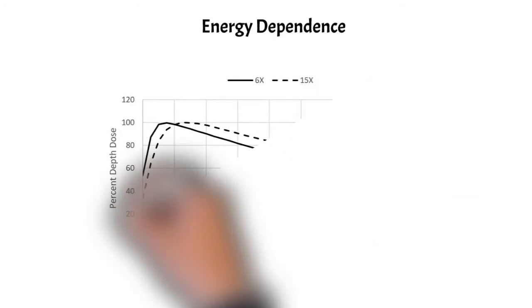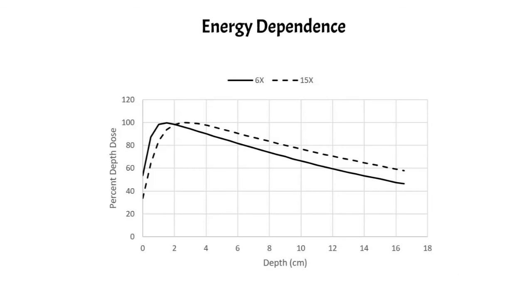Here's an example of the energy dependence of the PDD. Here you see a PDD for 6x and 15x energies, and you can see that the 15x PDD is higher than the 6x PDD and also that the buildup region is longer, so the depth of d max for a 15x beam is actually deeper in a patient than 6x beam and therefore it has greater skin sparing capabilities.